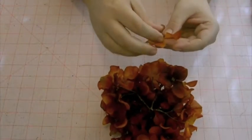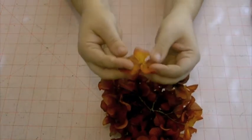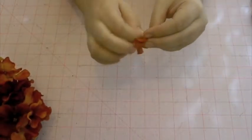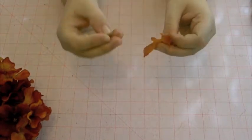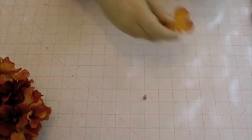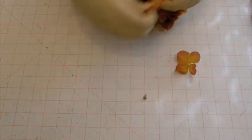The blossoms pop off real simple and then pull out the centers that come with them. They can be a little bit difficult because there's a spiky tab that helps keep them on, but if you just pull it will come off without doing damage to the petal.